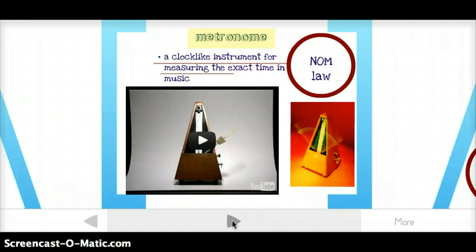The next word is metronome. So, again, measure, and then nom means law. The reason a metronome and that root for law, gnome, is in there is because it has to do with the law of music. So, metronome is a clock-like instrument for measuring the exact time or the law of music. You've probably seen them before if you're in a choir or band or orchestra, anything like that, and you're probably familiar with this sound.